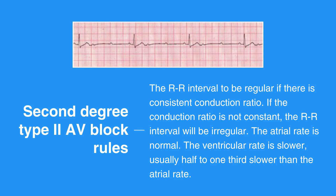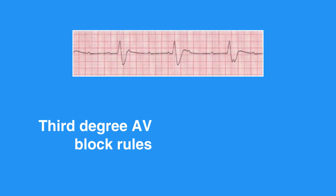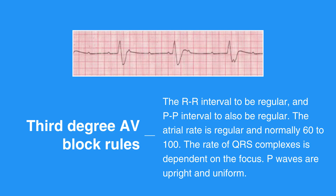The QRS complex measures less than 0.12 seconds. Third degree AV block, or complete heart block, rules include RR interval to be regular and PP interval to also be regular. The atrial rate is regular and normally 60 to 100. The rate of QRS complexes is dependent on the focus. If the focus is ventricular, the rate will be 20 to 40. If the focus is junctional, the rate will be 40 to 60. P waves are upright and uniform.